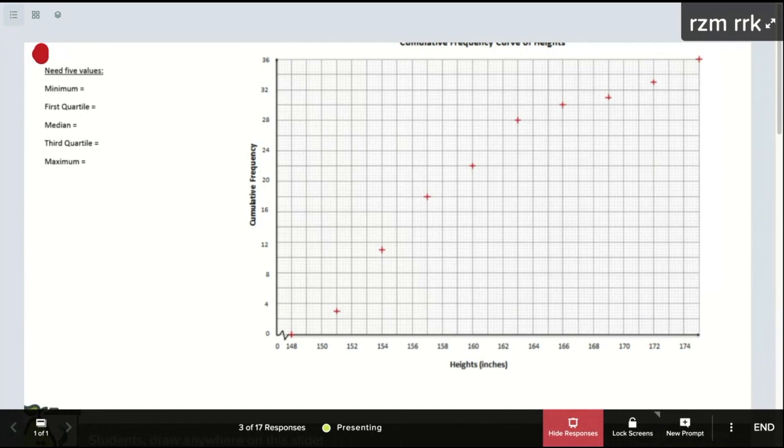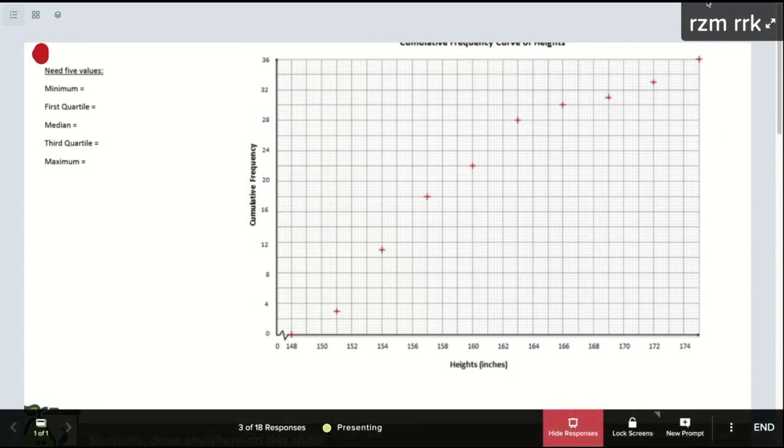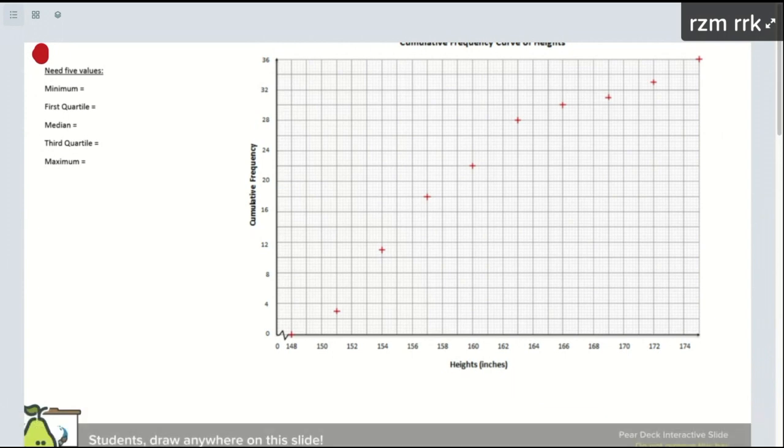Remember last class, this is what we did. We actually graphed this. So the first thing I want everybody to do is draw your line. Let's see if elementary school paid off. Am I able to connect those points? All right. Make sure everybody's able to do that.